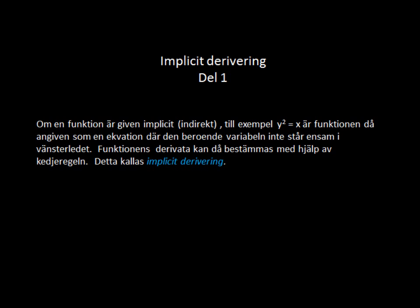So if we have a function that is implicit, like say y squared equals x, we can see that the dependent variable is not alone on the left side like we would be used to. So I'll show you how to use implicit differentiation to solve this and then we'll compare it to the explicit.